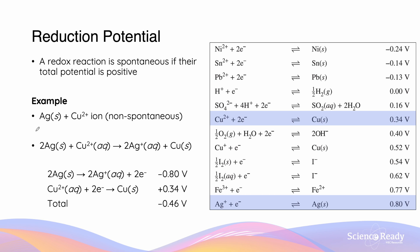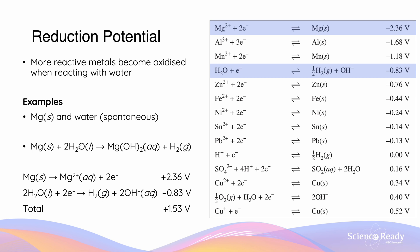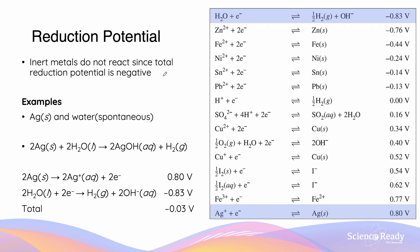We can look at the opposite reaction: if we add silver into copper ion solution, the reaction does not occur. This is because the oxidation potential of silver is −0.80 V, and the reduction potential of copper is +0.34 V, giving a negative total. A reaction occurs if the metal has a lower reduction potential than the metal ion. If we react magnesium with water, the oxidation of magnesium is +2.36 V and the reduction potential of water is −0.83 V; adding these gives +1.53 V, meaning magnesium will react spontaneously with water. Noble metals like silver do not react with water because the total reduction potential is negative, giving no reaction.